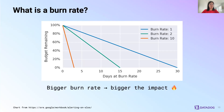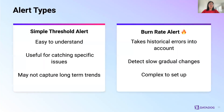This is a very high-level explanation of burn rate alerts, so I recommend reading the Google SRE book, specifically chapter 5, or watching some of the other talks here at the SLO conference. In comparison, simple threshold alerts are much easier for humans to understand and are useful at catching specific issues. But compared to burn rate alerts, simple threshold alerts cannot capture long-term trends. Burn rate alerts, on the other hand, can take historical errors into account and detect slow, gradual changes. On the downside, they are a little bit more complex to set up and configure.